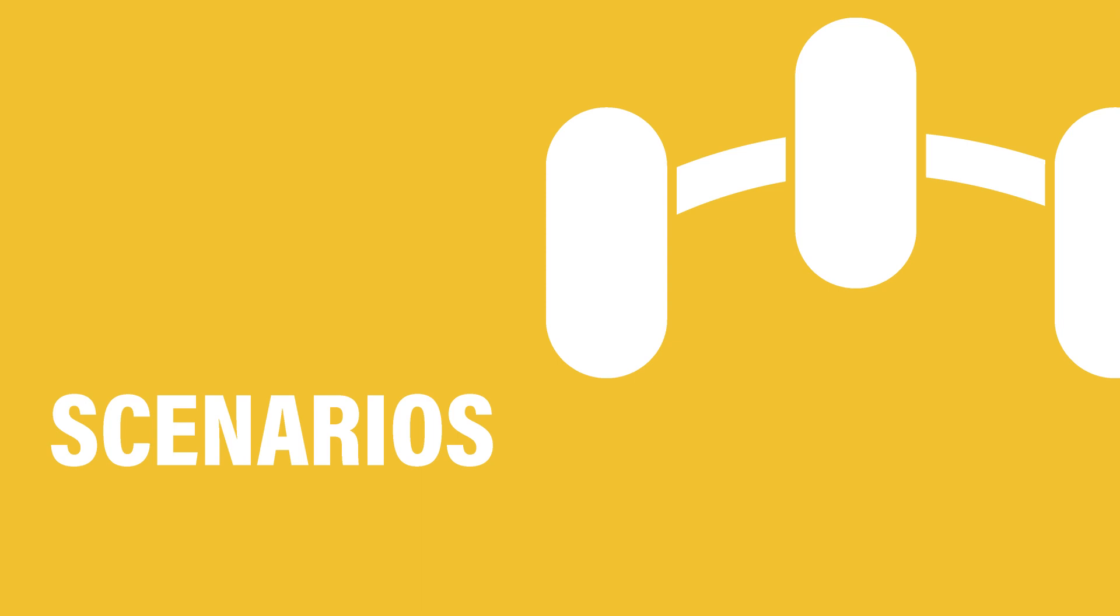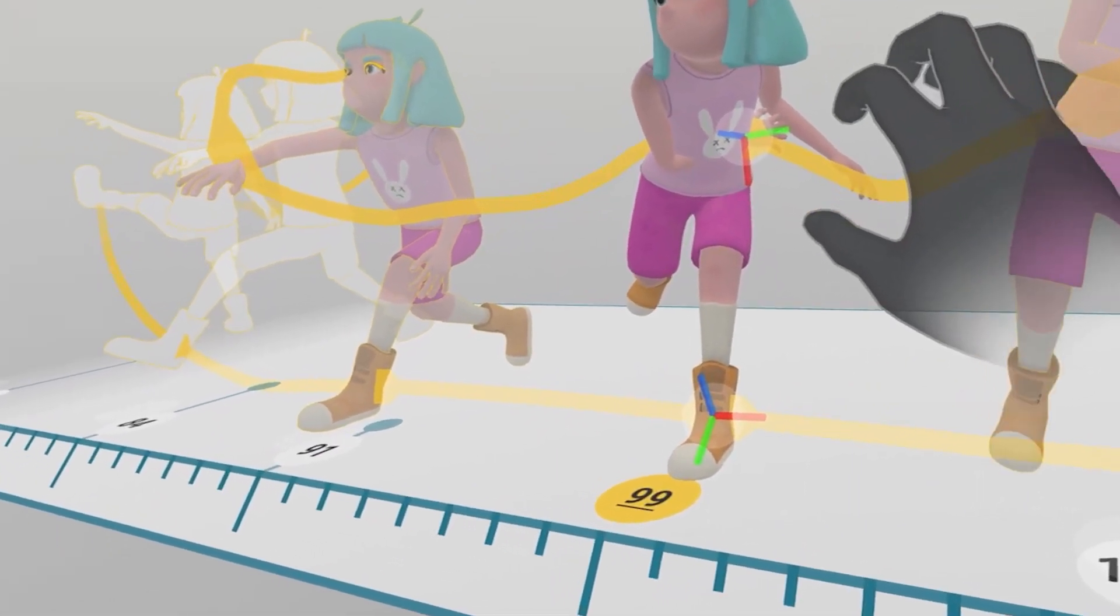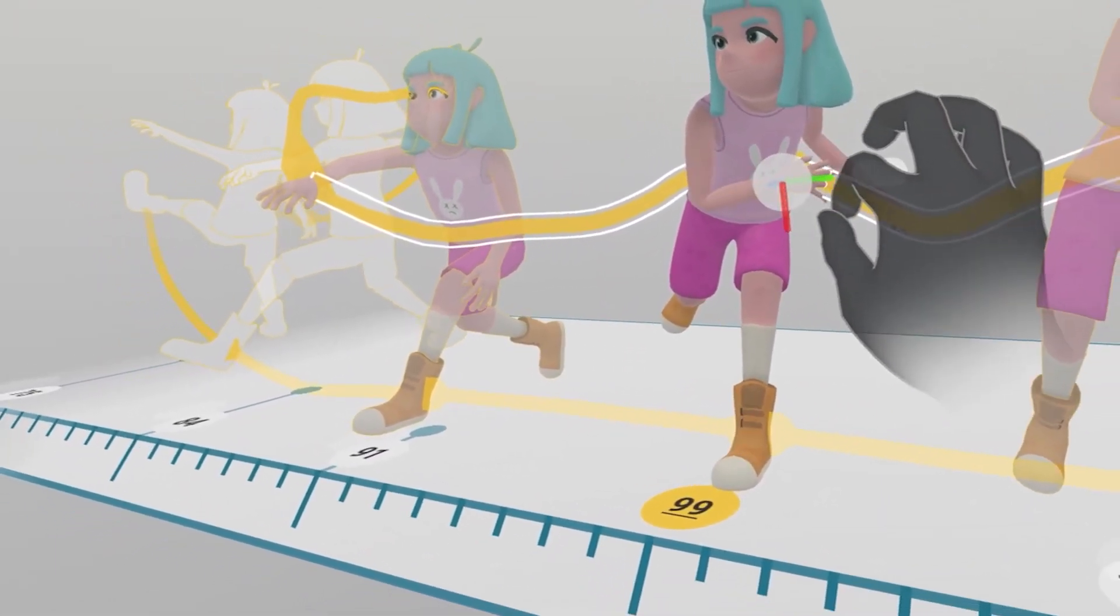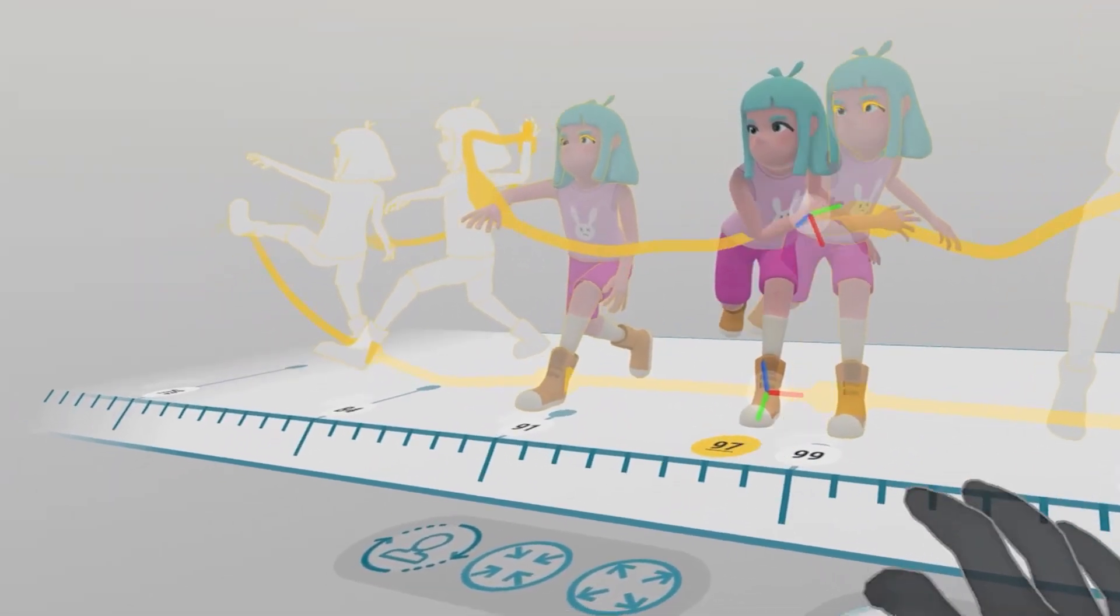We implemented three scenarios to demonstrate some of the capabilities of Time Tunnel. The first scenario shows how Time Tunnel can be used to fix motion artifacts. In this case, the character's arm penetrates through the character's body. By making small adjustments, the changes propagate to adjacent frames and remove the occlusion.